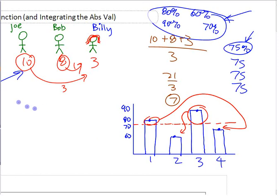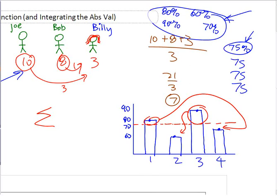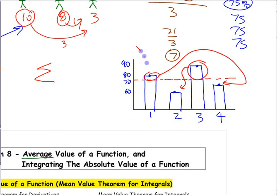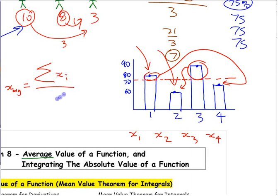If you wanted to write a formula for this: the average, or x-bar, equals the sum of all data values — x1, x2, x3, x4 — divided by how many there are. That's the standard formula for a discrete average.